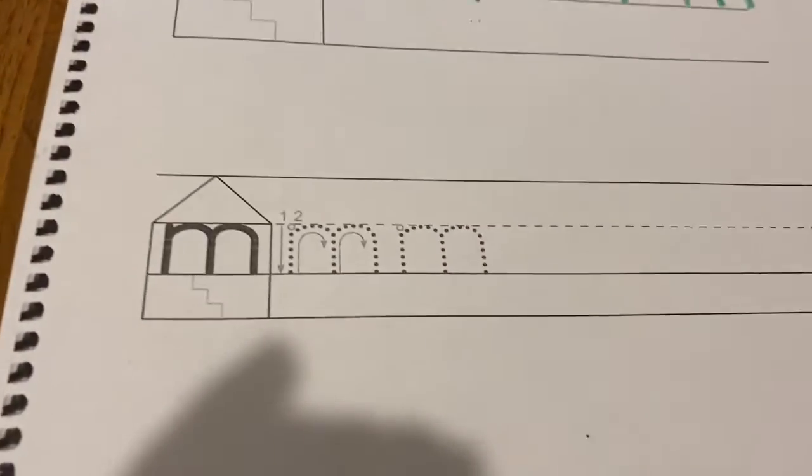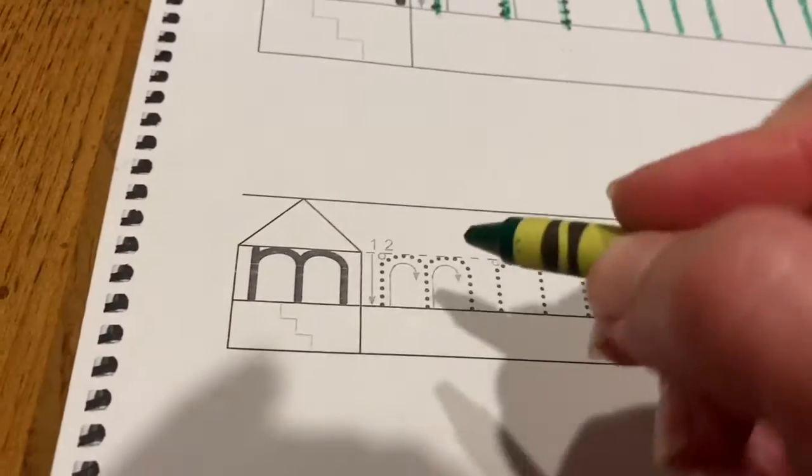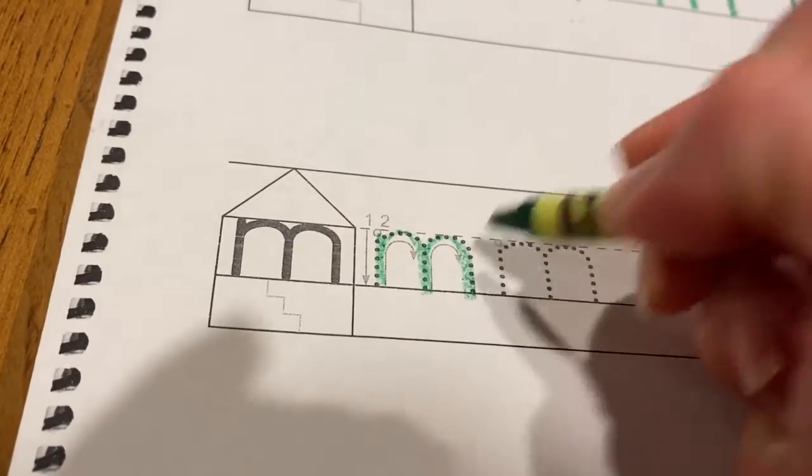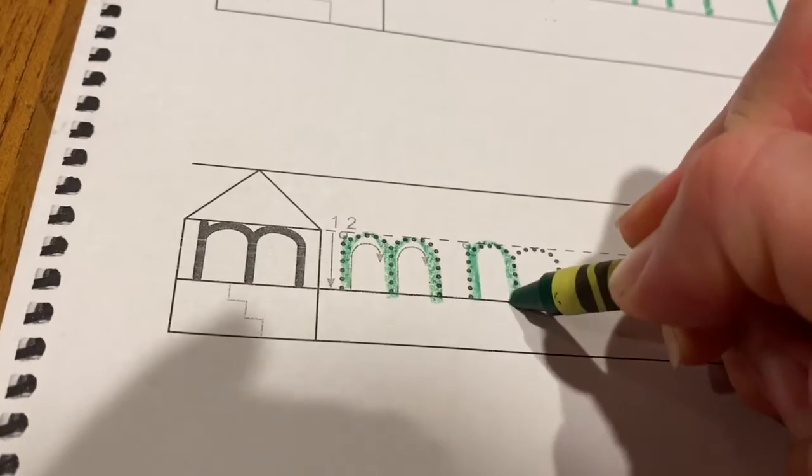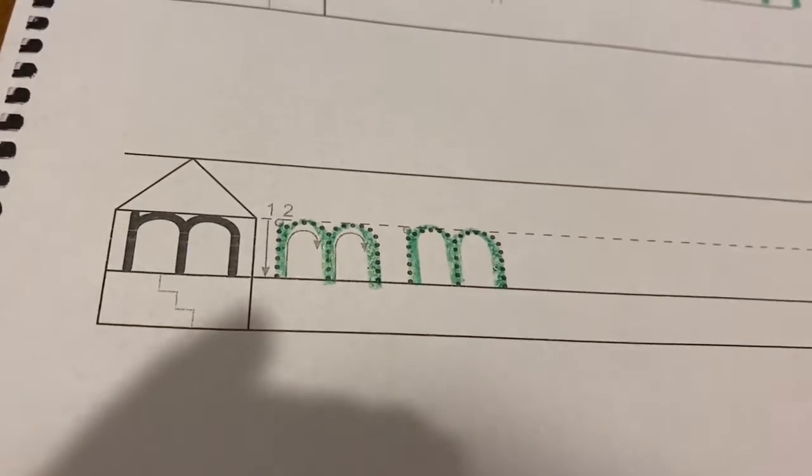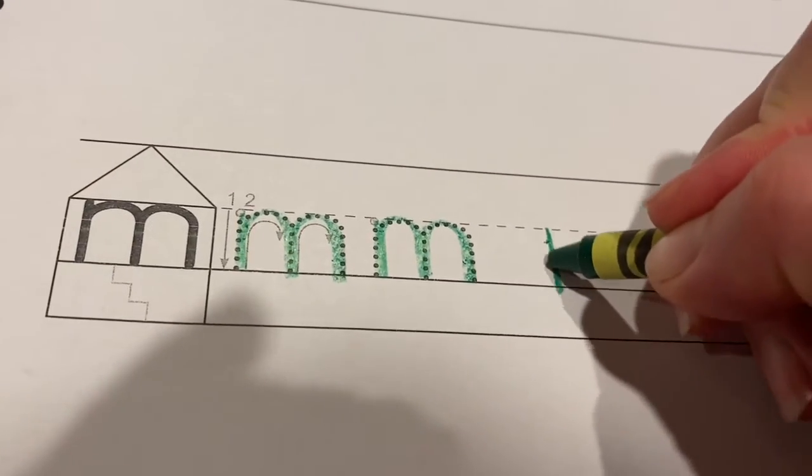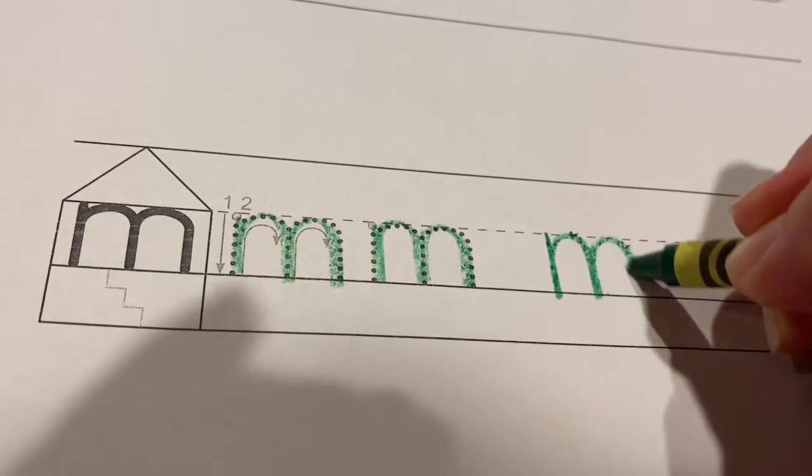You can go down to the bottom of your page and trace, trace, and then write on your own just two, just two m's.